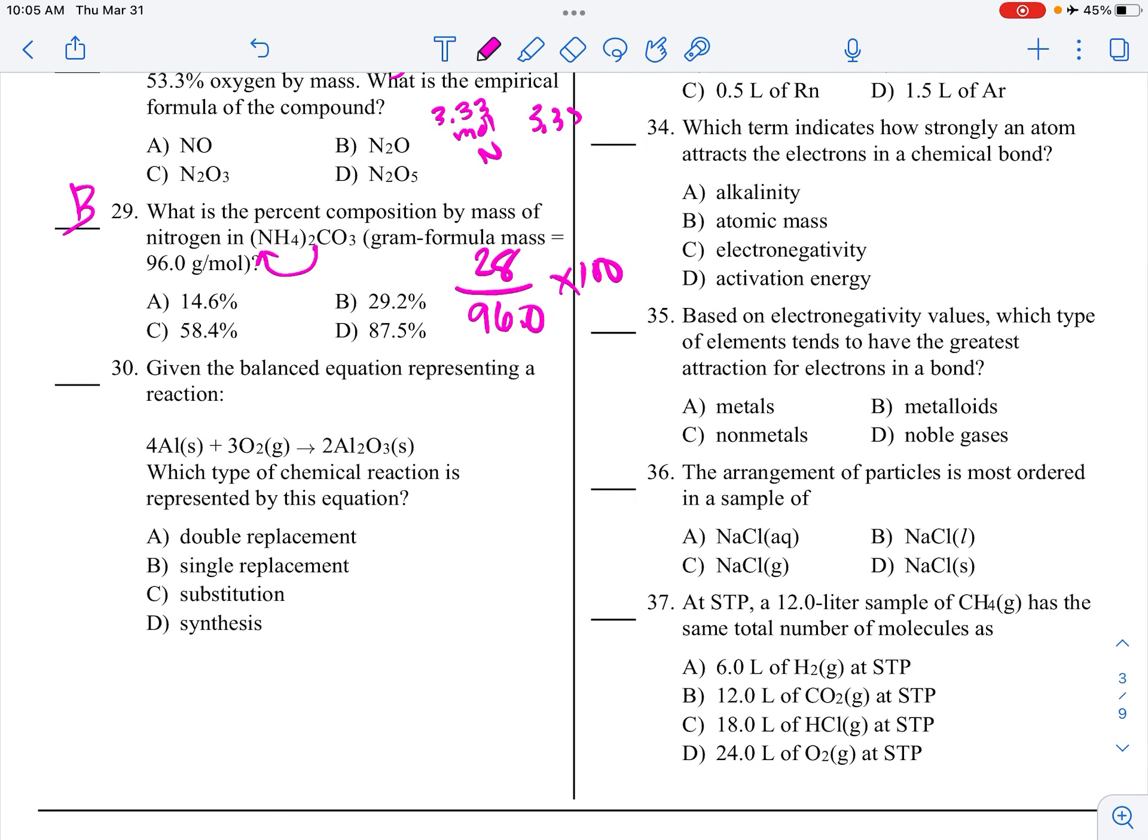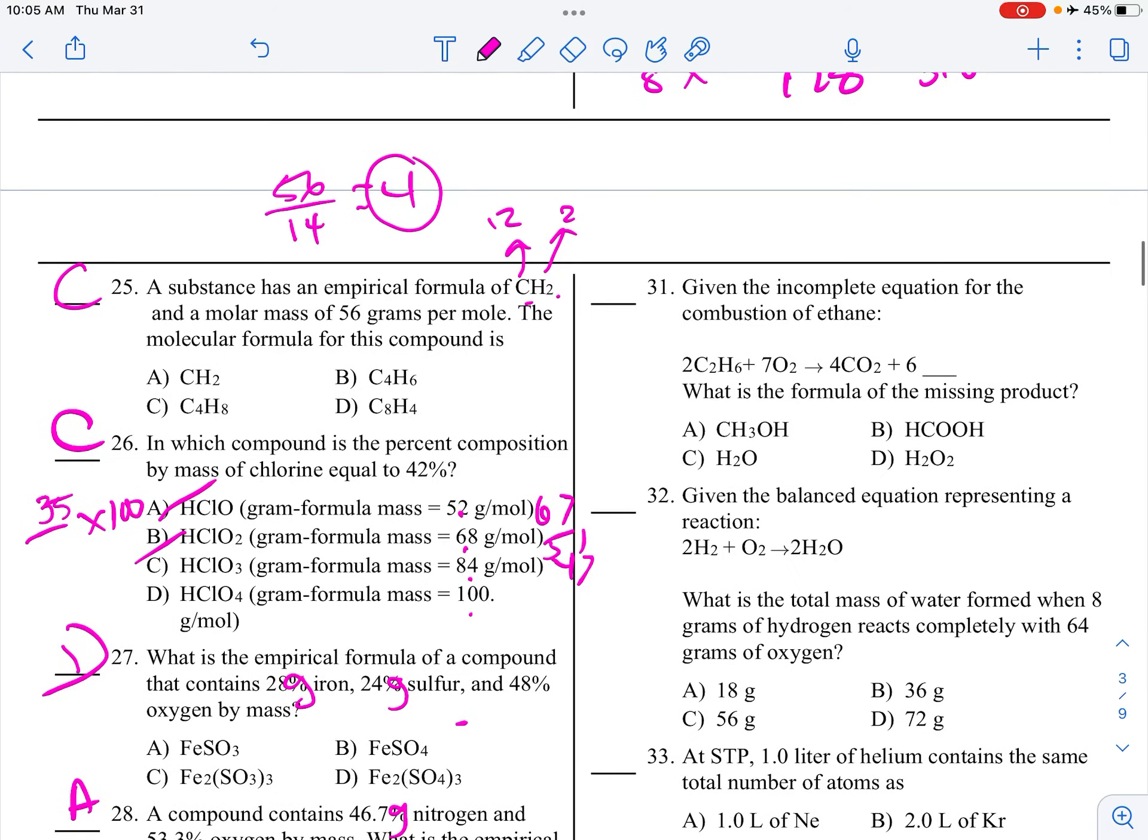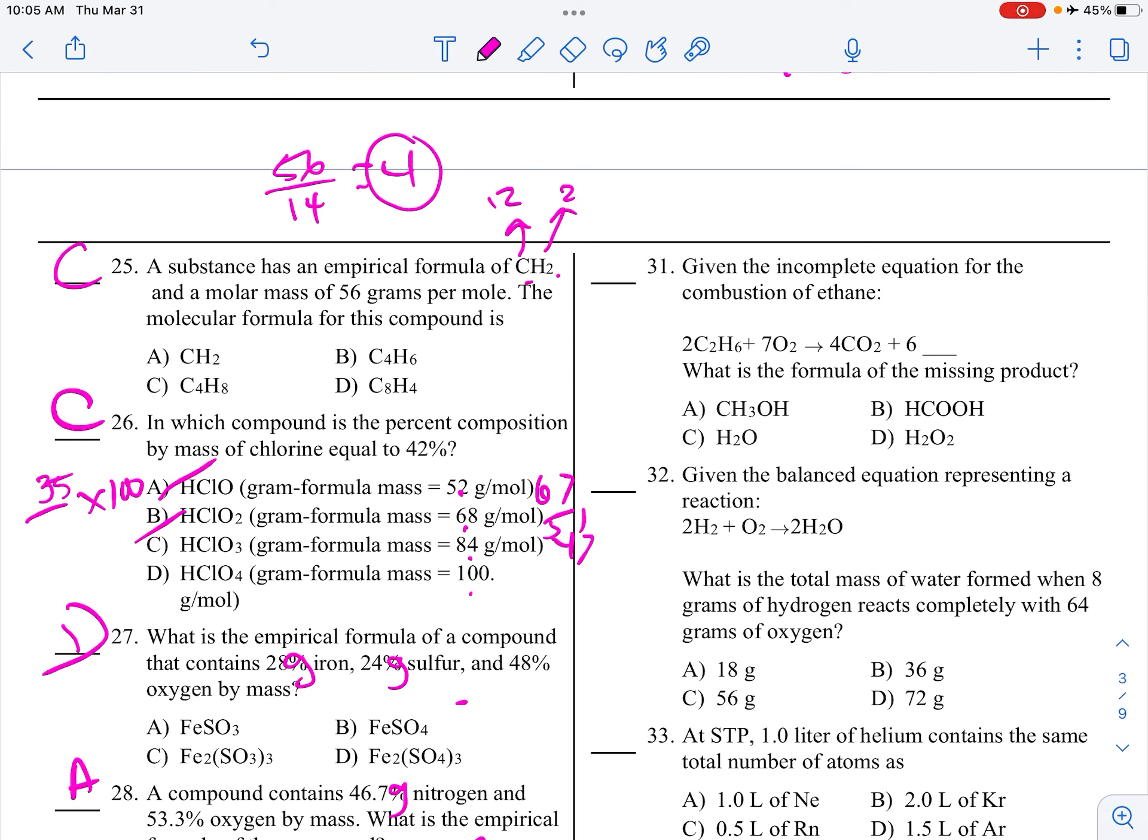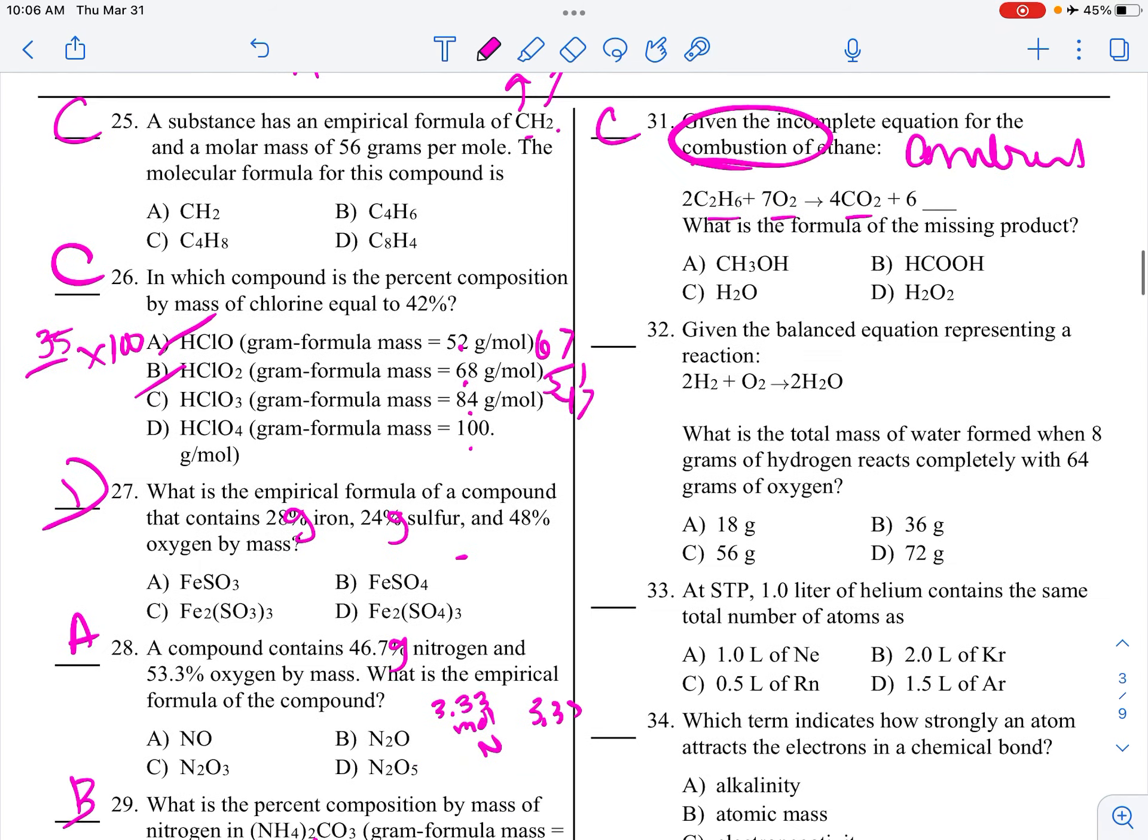Alright. Given the balanced equation representing a reaction, which type of chemical reaction is this? So, I have one singleton and a singleton coming together to form one compound. Coming together, that's called a synthesis reaction. What is the formula of the missing compound? So, let's take a look. I have a hydrocarbon and oxygen. CO2 and H2O. Oh, this is a combustion. Oh my gosh, it told me. I didn't even need to do that.